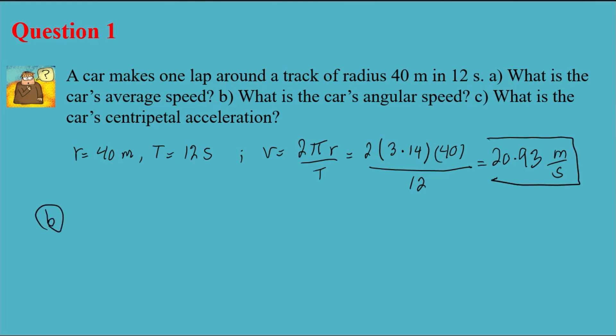For part B, I need to find the angular velocity. For angular velocity, I know V equals ω times R. V is the velocity, ω is the angular velocity, and R is the radius. So for finding angular velocity, ω is V over R. My V from the previous part is 20.93, R is 40, so ω is 0.52. That's my final answer for part B.